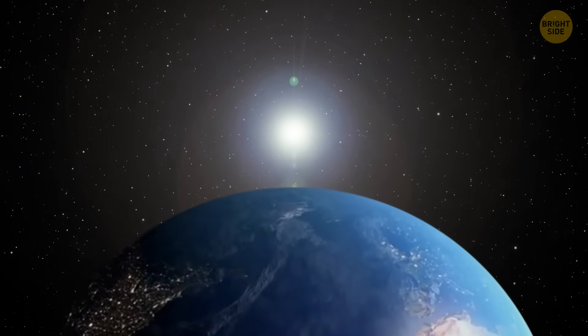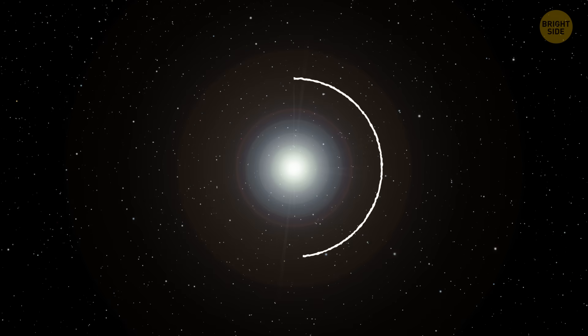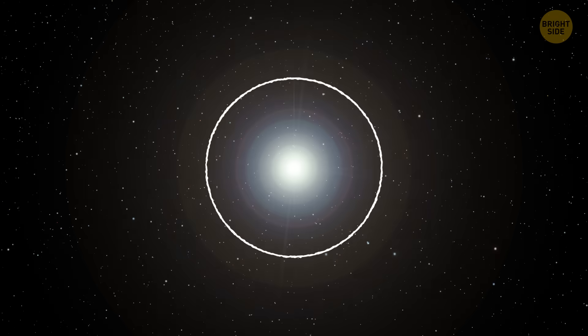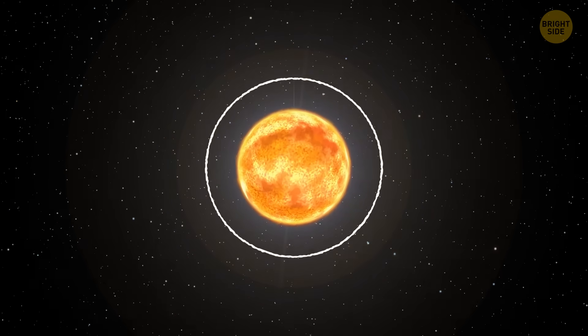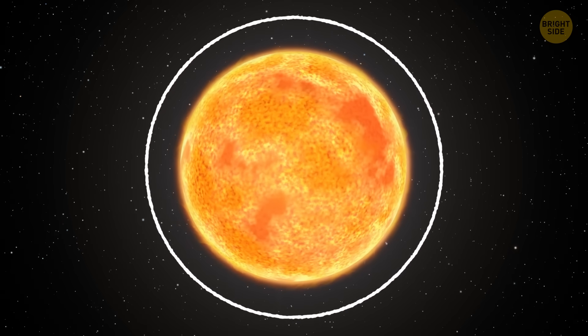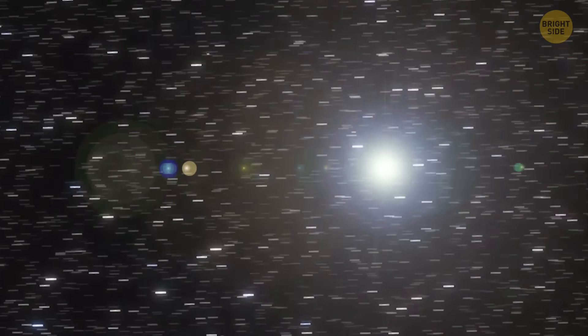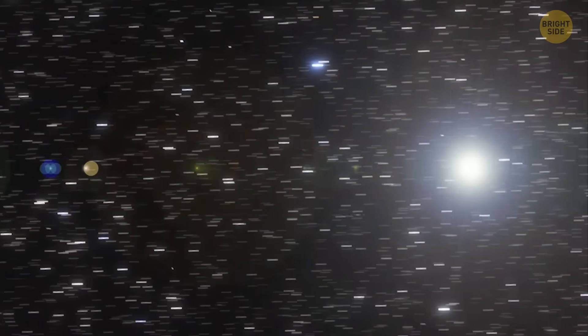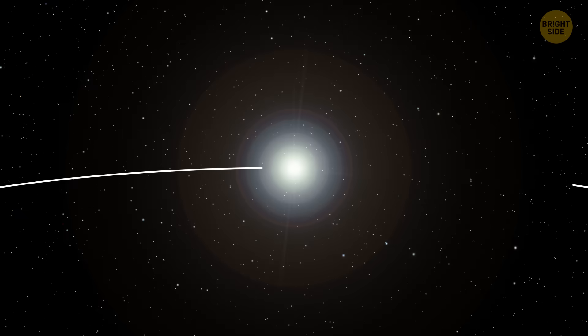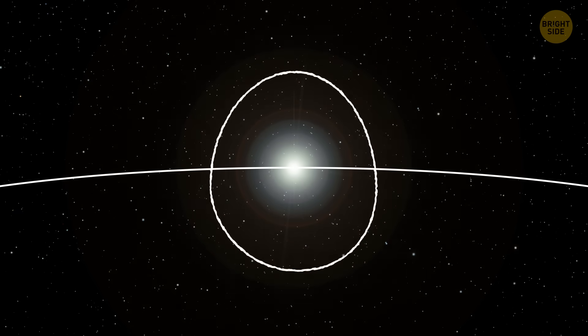But the coolest thing about Vega, which sets it aside from other stars, is that it's not shaped like a perfect sphere. Unlike the sun, which rotates slowly and is almost spherical, Vega spins very fast, completing one rotation in just 12.5 hours. And it causes it to bulge at the equator, taking on an egg-shaped appearance.